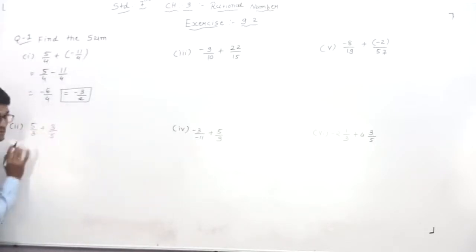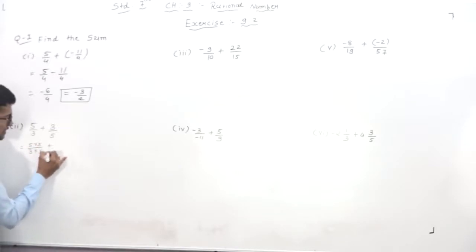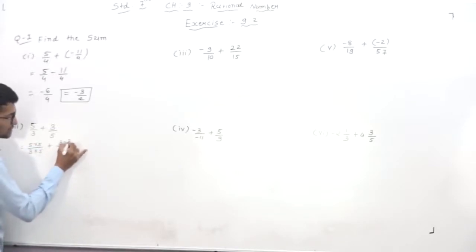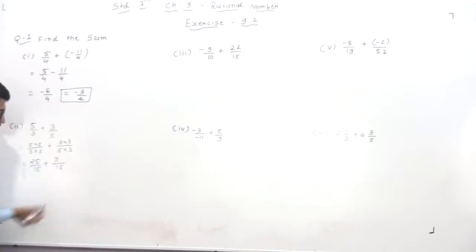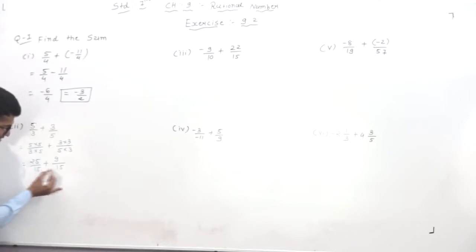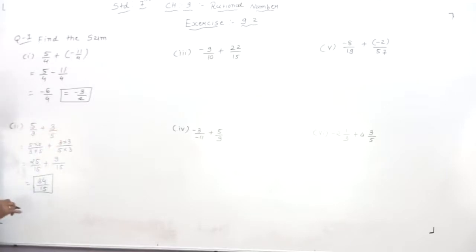The second question is 5/3 + 3/5. The denominators are different, so find the LCM of 3 and 5, which is 15. Multiply: 5/3 × 5/5 gives 25/15, and 3/5 × 3/3 gives 9/15. Now 25 plus 9 equals 34, so the answer is 34/15.